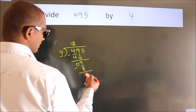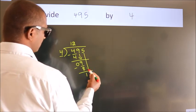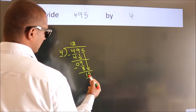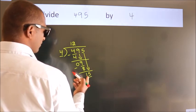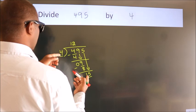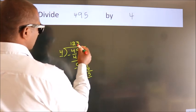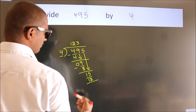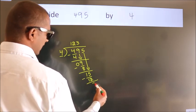After this, bring down the beside number. So 5 down. 15. A number close to 15 in 4 table is 4 threes, 12. Now we subtract. We get 3.